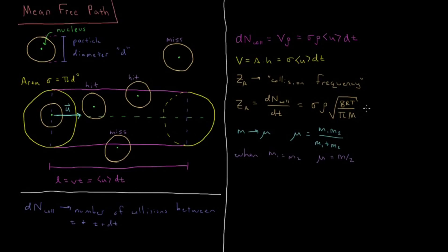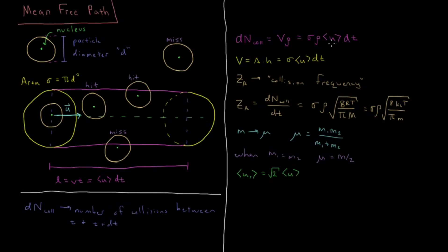Additionally, we can multiply numerator and denominator by Avogadro's number and instead express this in terms of the Boltzmann constant k and particle mass m rather than the gas constant and molar mass. So the average velocity expression goes to the square root of 8kT divided by pi·m. This is the m that we replace by the reduced mass mu equals m over two, giving us the average relative velocity equal to the square root of two times the average velocity.